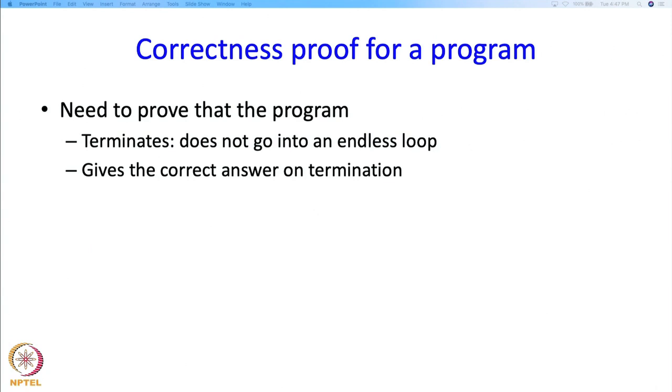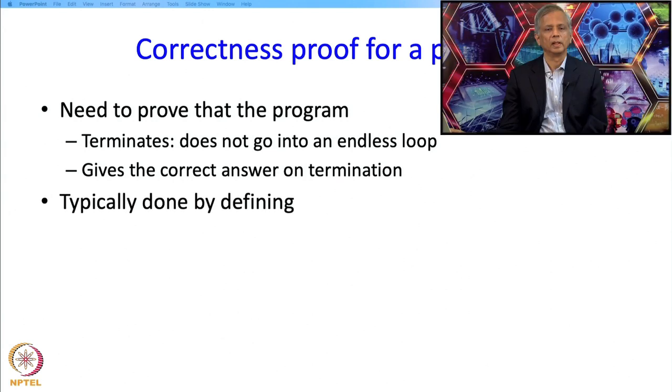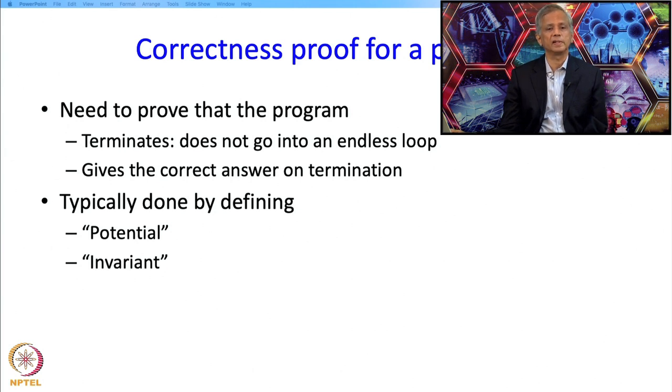So how does the correctness proof of a program look? We need to prove that the program must terminate, because a program could go into an endless loop — and we do not want that. We also want the program to give the correct answer when it terminates. Typically this is done by defining something called a potential, which tells us that the program terminates, and something called an invariant, which says that the program will give the correct answer. We are going to see these two things now.